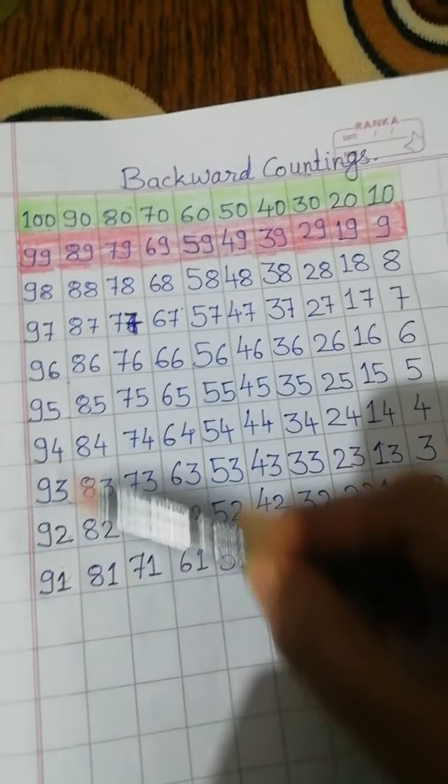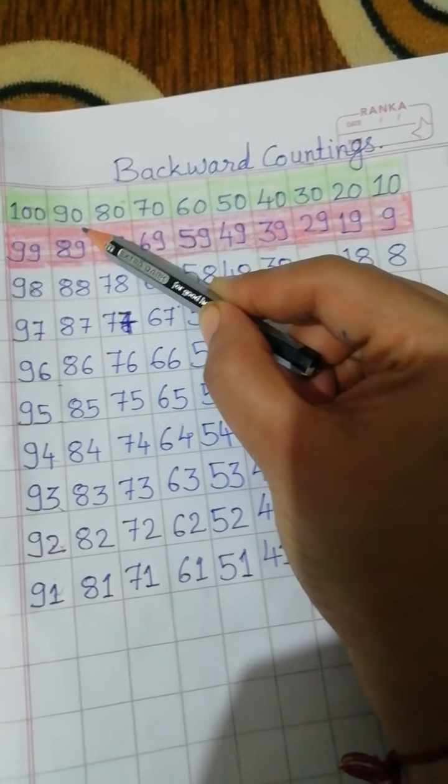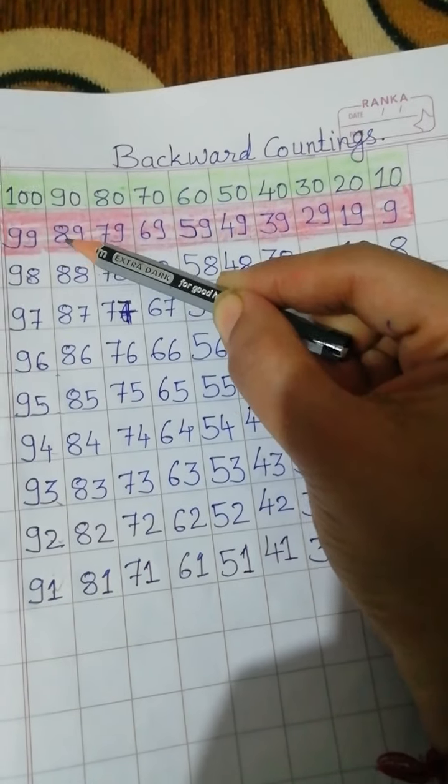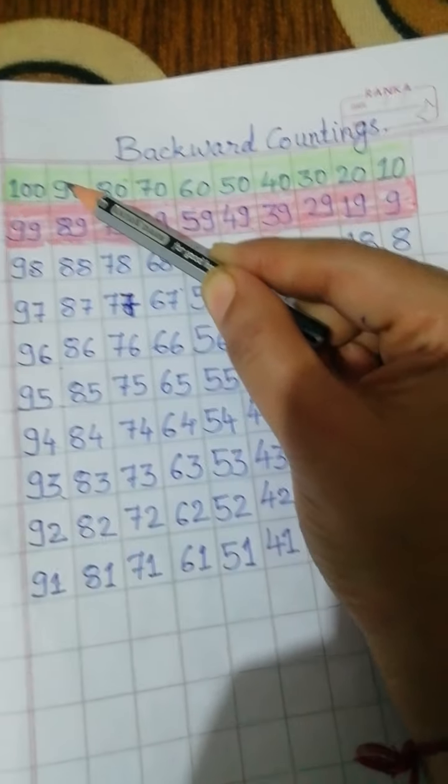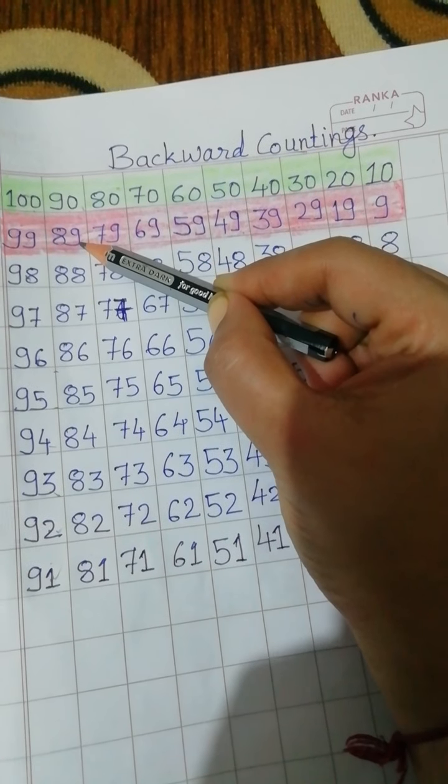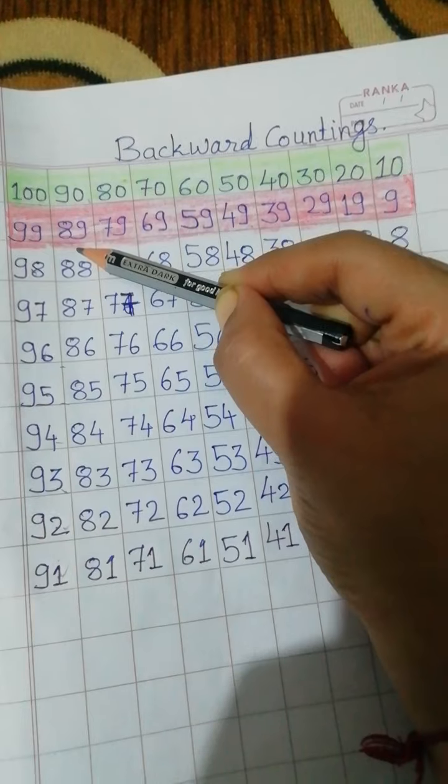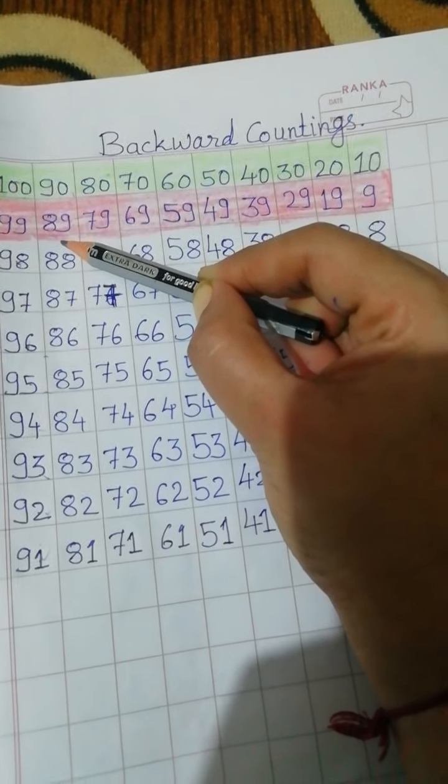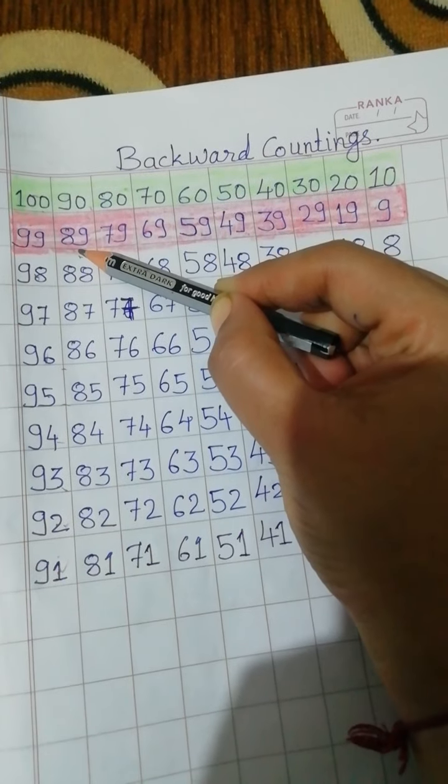Then 90. 91 के before क्या आता है? 90. और अब यहाँ पहले हम लोग को ये ध्यान रखना है कि 90 के पहले 89, 89 आता है. 90 के पहले क्या number आता है? 89.